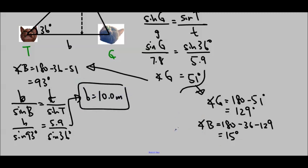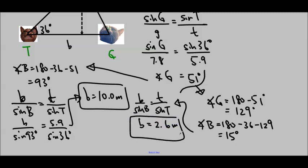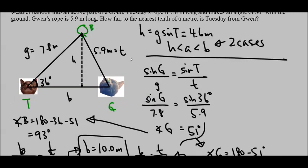If we use this 15 degrees and use the same thing, b over sine b equals t over sine t, then we find that little b equals 2.6 meters. And these are actually both possible. So we could have Gwen standing here, or it's even possible for Gwen to be standing really close to Tuesday, and they're both looking up at the balloon.